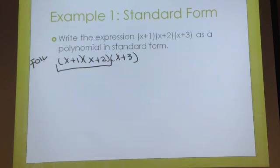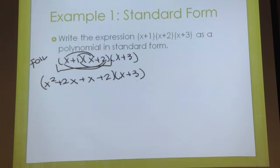Foiling is first, outside, inside, last. You'll get x squared for the firsts, 2 times x is plus 2x, 1 times x is plus x, and 1 times 2 is plus 2. Put parentheses around that and multiply on that x plus 3. Simplify before you actually multiply. You end up with x squared plus 3x plus 2 times x plus 3.